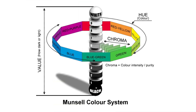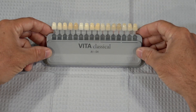Doctors, grab your staff for this one because everyone is going to benefit. What do shades consist of and why is it so important? It should be as simple as matching a tab to a tooth and writing it on a lab slip, but it really isn't. We aren't simply trying to communicate a single hue or color — we are also attempting to distinguish the shade's chroma, which is the level of saturation in your hue, as well as the shade's value, the level of white or dark overall.